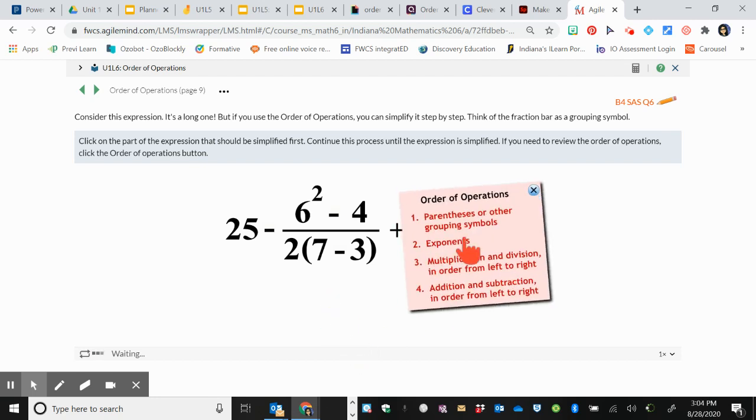Looking at our order of operations, there are no parentheses in our numerator, but there are exponents. 6 times 6 is 36.